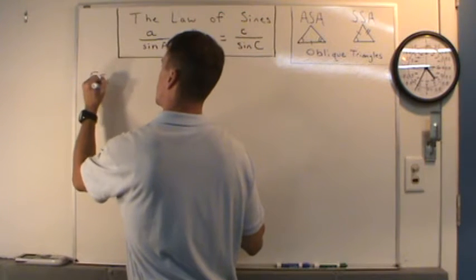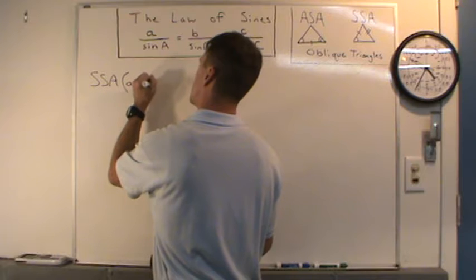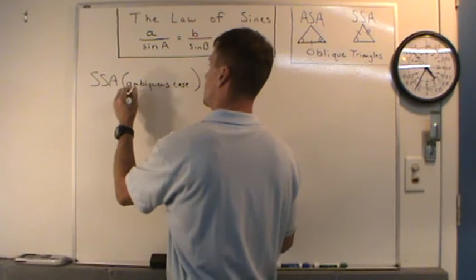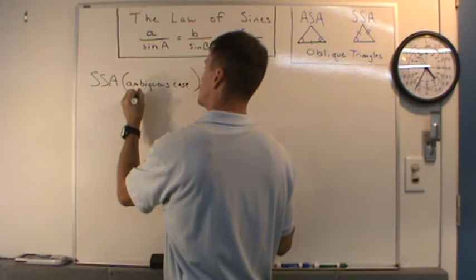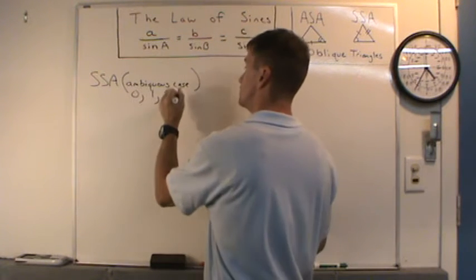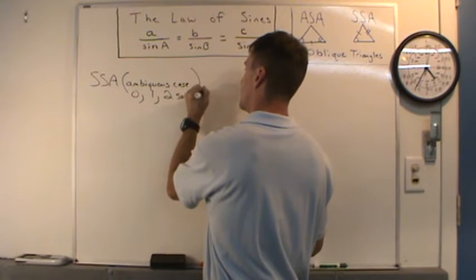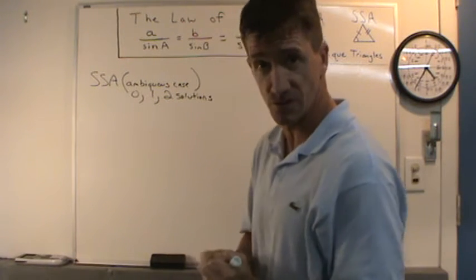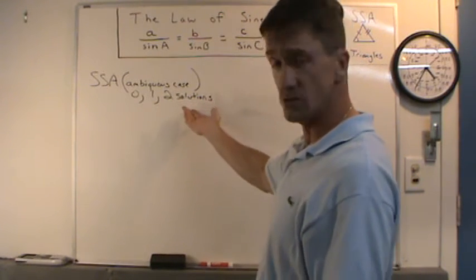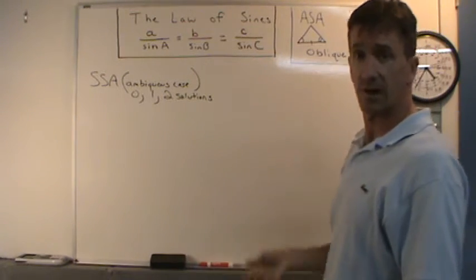SSA is the ambiguous case because there can be one solution, two solutions, or zero solutions to the triangle — given two sides and a non-included angle.